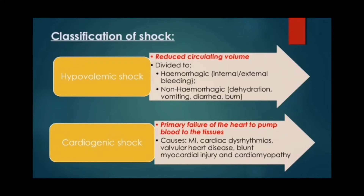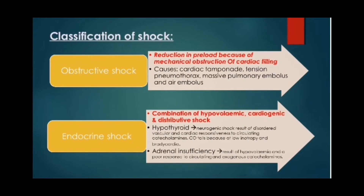Non-hemorrhagic hypovolemic shock is caused by dehydration, vomiting, diarrhea, and burns. Cardiogenic shock is a primary failure of the heart to pump blood to the tissues. Causes include MI, cardiac dysrhythmias, valvular heart disease, blunt myocardial injury, and cardiomyopathy. Obstructive shock involves reduction in preload due to mechanical obstruction of cardiac filling; causes include cardiac tamponade, tension pneumothorax, and massive pulmonary embolus.